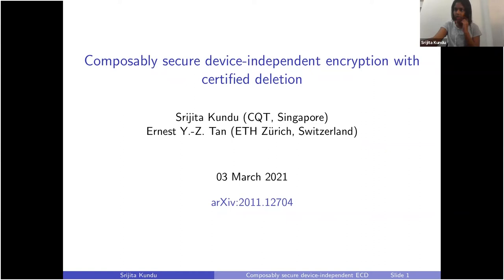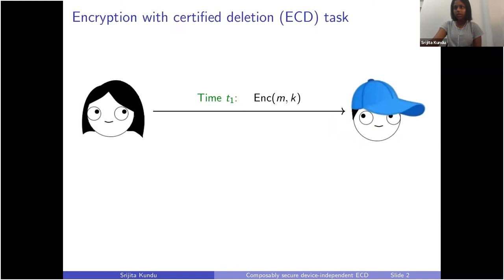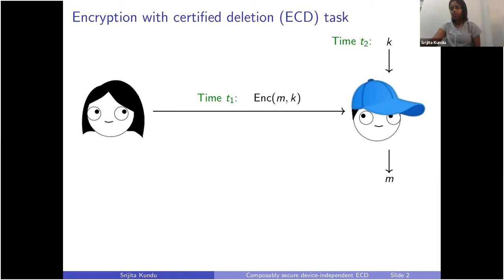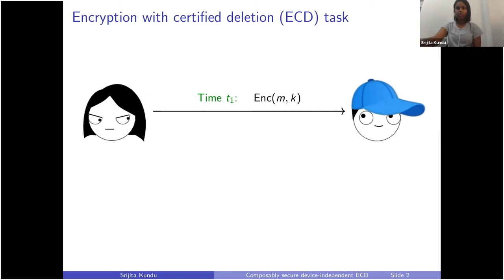This is a new cryptographic task that we considered. We have two parties, Alice and Bob. At some time t1, Alice sends some message m that is encrypted with a secret key to Bob. At some later time t2, the secret key will be revealed to Bob and then he can use the secret key to decrypt the message. But suppose after the encrypted message has been sent, but before the key has been revealed, Alice decides she doesn't want Bob to learn the message. Alice might want Bob to delete the ciphertext.